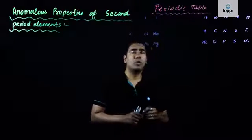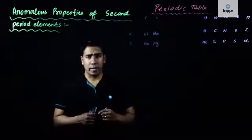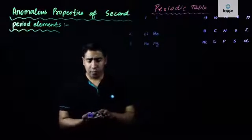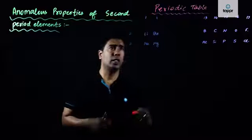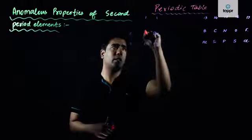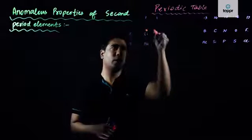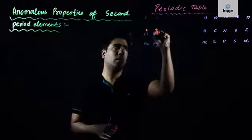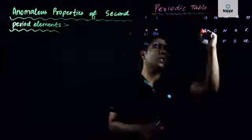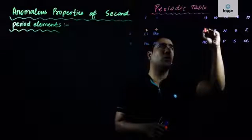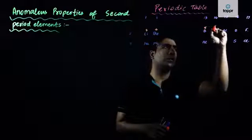We also know their respective atomic numbers. In the case of lithium we have atomic number 3, beryllium is 4, then boron is 5, carbon 6, nitrogen 7, oxygen 8, fluorine 9. In a similar way sodium starts with 11, magnesium 12, aluminium 13, silicon 14, phosphorus 15, sulphur 16, and chlorine 17.